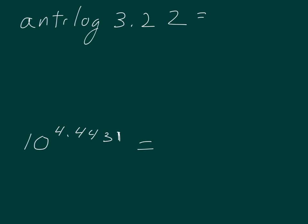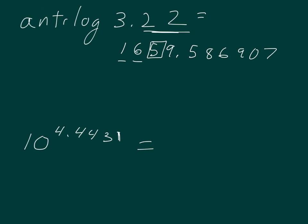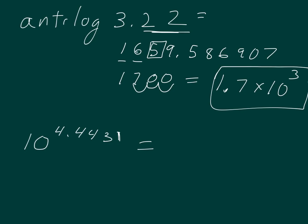First one: 10 to the 3.22. That gives me a calculator lie of 1659.586907. I have 2 decimal places, so I should only have 2 sig figs. I am going to round on the basis of that 5. Putting it in scientific notation so people can recognize the sig figs: 1.7 times 10 to the 3rd — 2 sig figs, 2 decimal places.